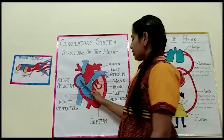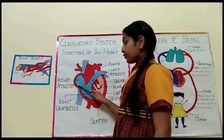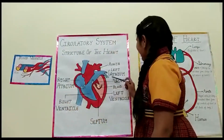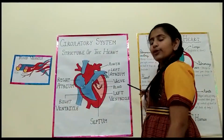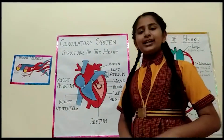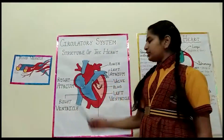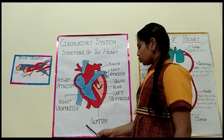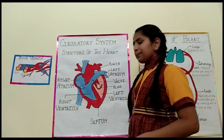There are four chambers in the heart: right atrium, right ventricle, left atrium, and left ventricle. There is a wall which separates both parts, known as the septum.